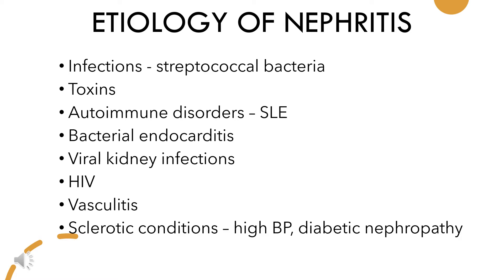Major etiologies of nephritis are infectious agents such as streptococcal bacteria, toxins, autoimmune disorders such as systemic lupus erythematosus, bacterial endocarditis, viral kidney infections, HIV, vasculitis, and sclerotic conditions such as high blood pressure and diabetic nephropathy.